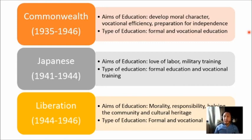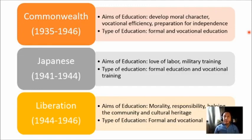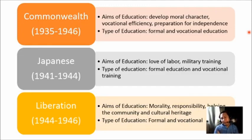From 1935 to 1946 — the Commonwealth Period — the Philippines began preparing for independence from America. With the Tydings-McDuffie Act, expansion and reformation of the Philippine curriculum began. Filipino teachers were empowered to improve the curriculum, and as a result, content rich in culture-specific courses were added. The aims of education were to develop moral character, vocational efficiency, and preparation for independence, so patriotism was added as an important factor in the Philippine curriculum.